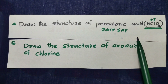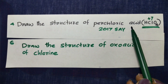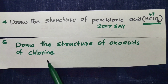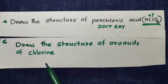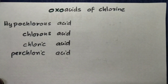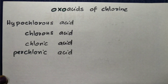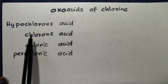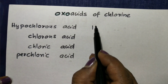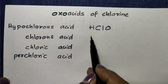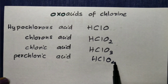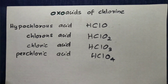We are going to look at the structure of chlorine in each oxoacid, which is very easy. On page 200, I will show all four oxoacids: hypochlorous, chlorous, chloric, and perchloric. The formulas are HClO, HClO2, HClO3, and HClO4.